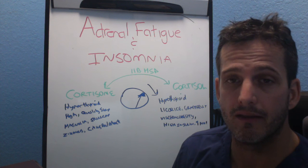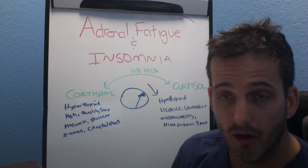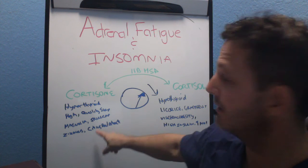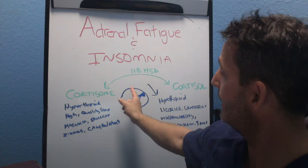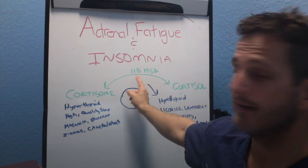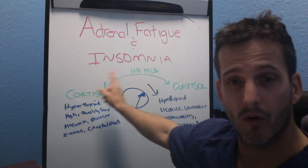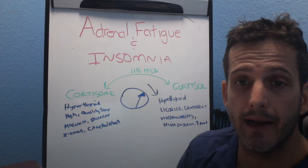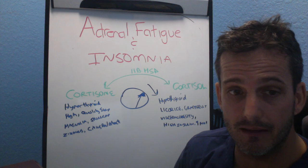Those are the big things we need to work on to lower cortisol. But we can also use certain nutrients to help upregulate 11-beta-HSD activity to make more cortisone — to make cortisol more inactive — so that we can get through the night and sleep.